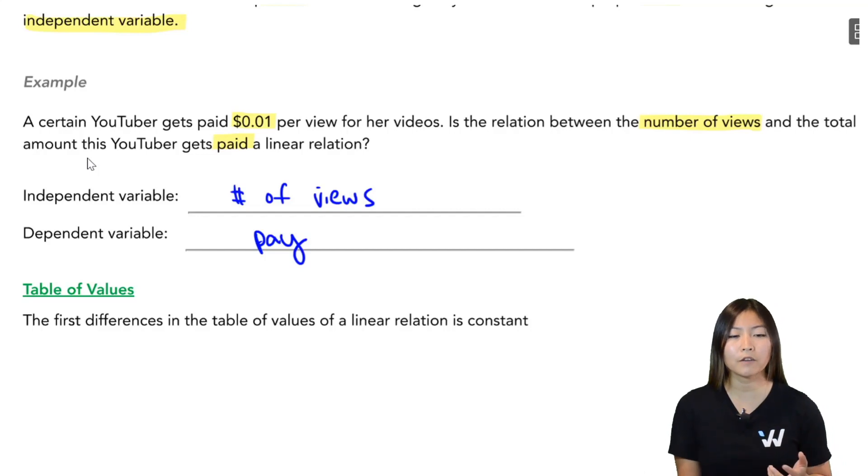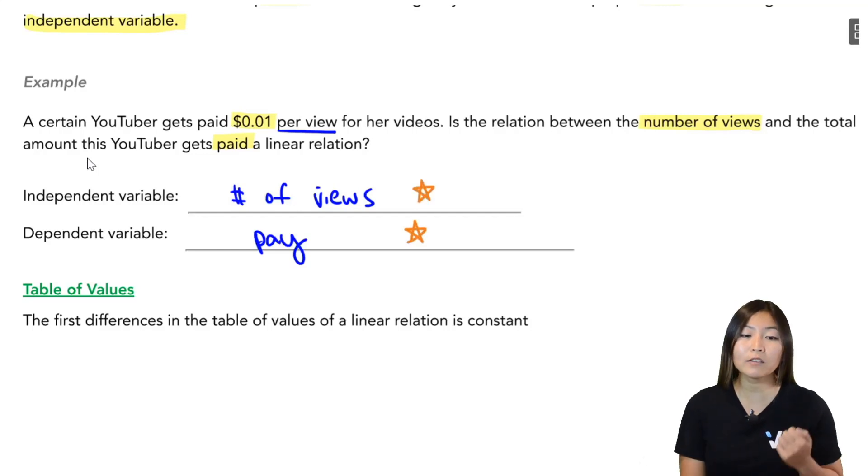All right. So if I take a look here for every one view, I go up by one cent. So if I go up another view, I go up another cent. If I go up another view, I go up another cent. So notice that it is proportional. The change in how much this person gets paid is proportional to the change in the number of views. So right off the bat, I know that this is a linear relationship because the change is proportional. Now, some questions are going to be harder for you to decide whether they're linear or not. So we actually have different ways to figure out if they are linear.